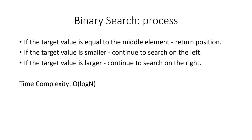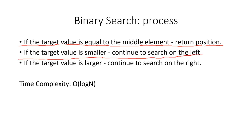During binary search there can be three cases. First, if the target value is equal to the middle element, we return the position. If the target value is smaller, we continue to search on the left side. If the target value is larger, we continue to search on the right side. The time complexity is O(log n), so if you have an array of size n, you can find your target element in logarithmic time, which is very efficient.